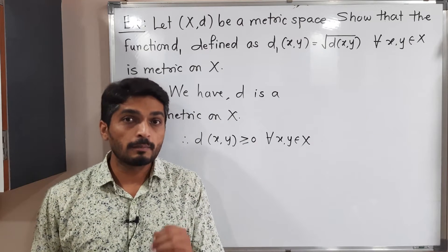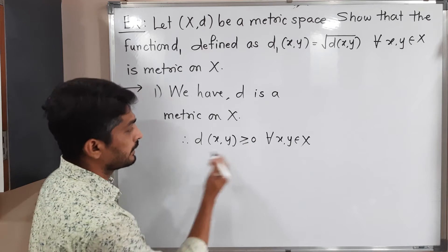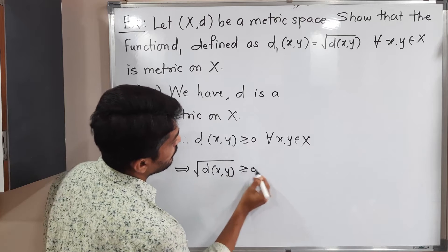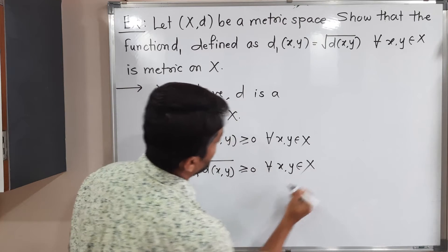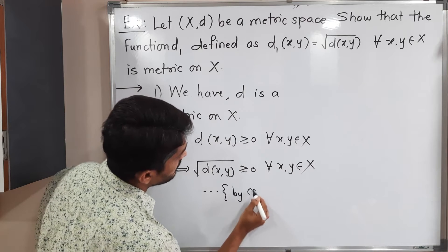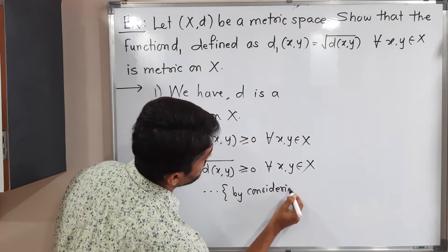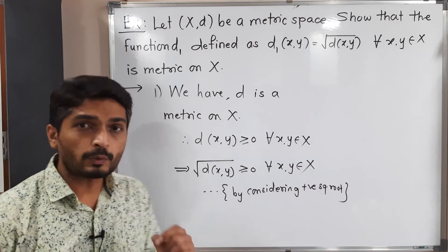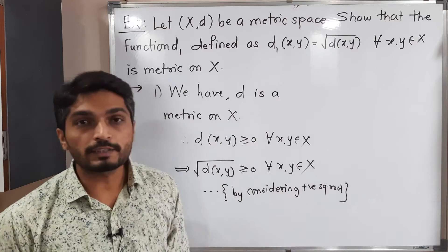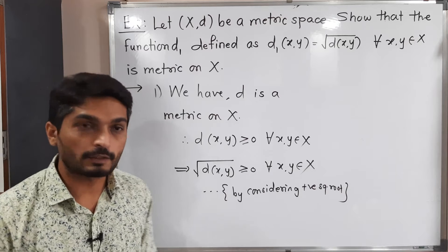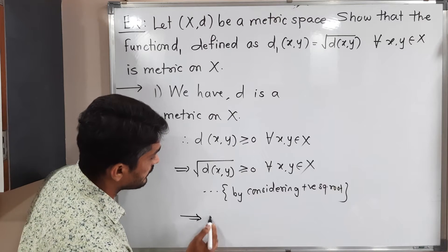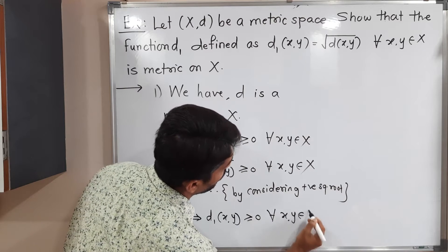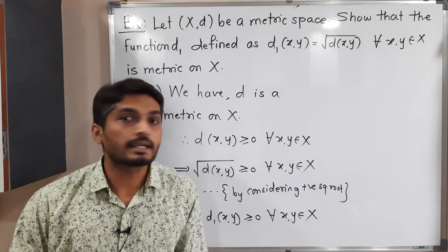I will take the positive square root of both sides. So we will have square root of d(x,y) is greater than or equal to 0 for all x, y belonging to capital X, by considering the positive square root. So square root of d(x,y) ≥ 0, and in this way d1 satisfies the first property.